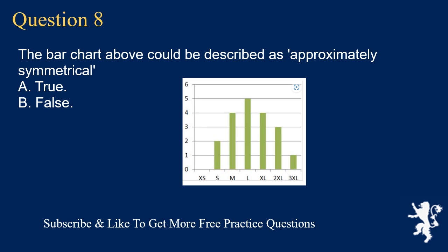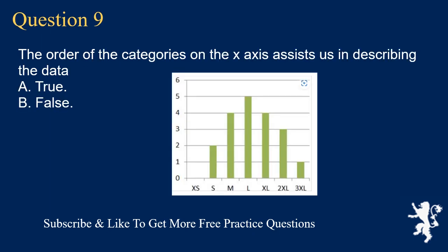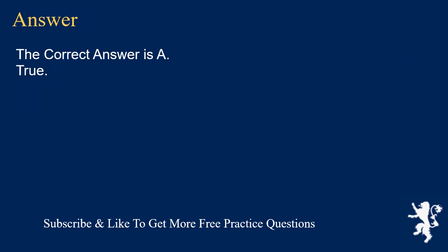Question 8: The bar chart above could be described as approximately symmetrical. A. True, B. False. The correct answer is A, true. Question 9: The order of the categories on the x-axis assists us in describing the data. A. True, B. False.